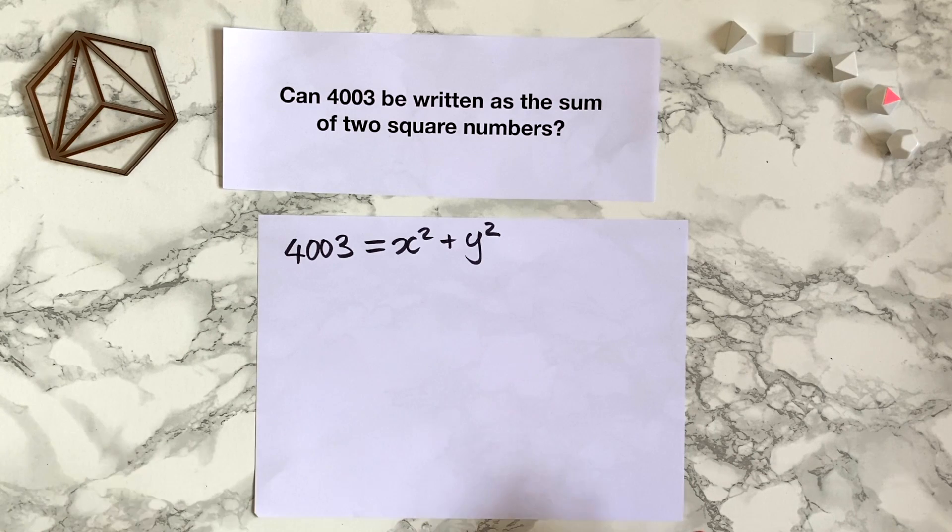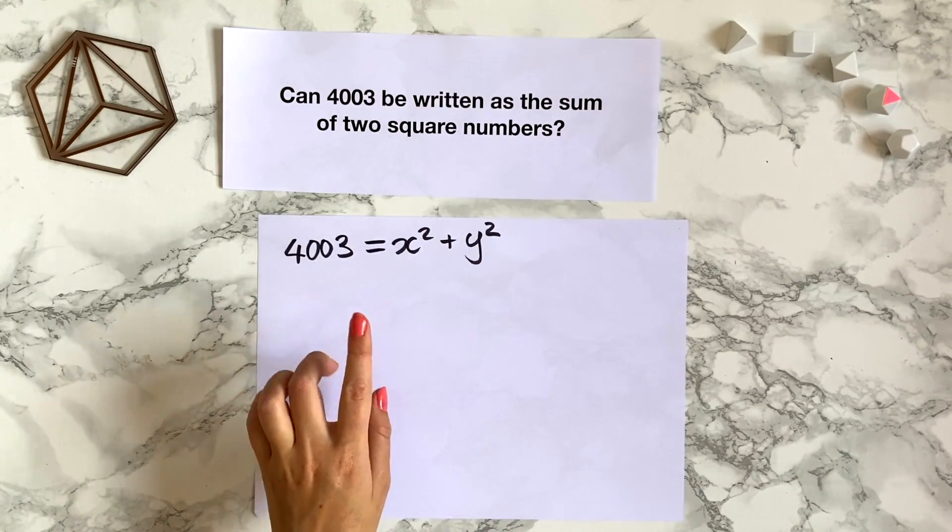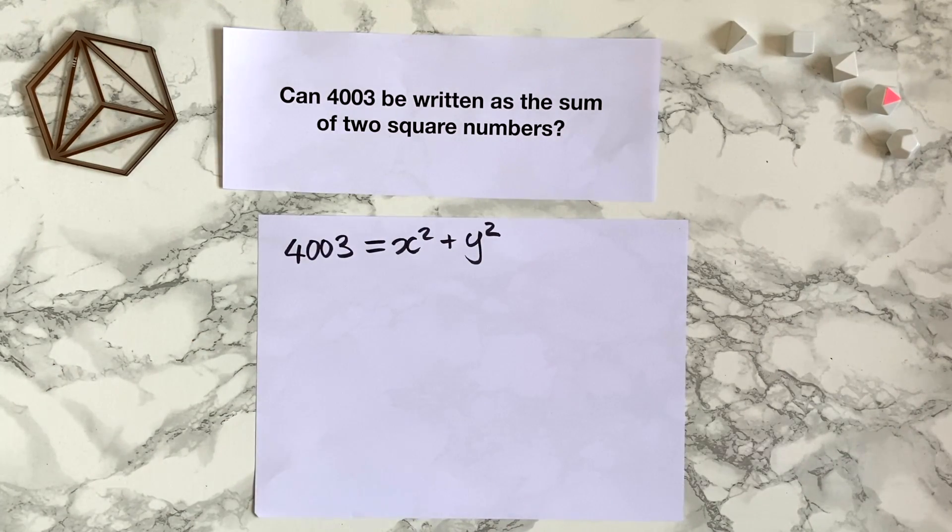By looking at this question initially, maybe you've got no idea whether we can do this. It could take quite a lot of trial and error to plug in different x and y values to see if we can get 4003. But what we can do is use modular arithmetic to find some information about what we would need x and y to be.